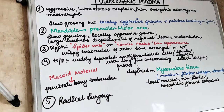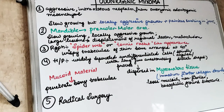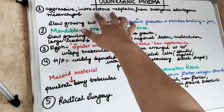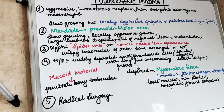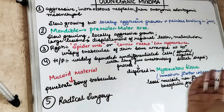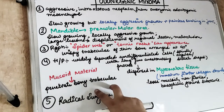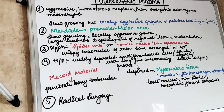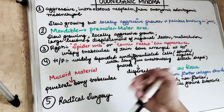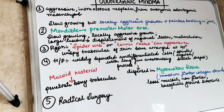Odontogenic myxoma is an aggressive intraosseous neoplasm — a tumour present in the bone. This mucoid material penetrates into the bony trabeculae. Because this gelatinous material invades inside the bone, this is considered a slightly aggressive neoplasm.